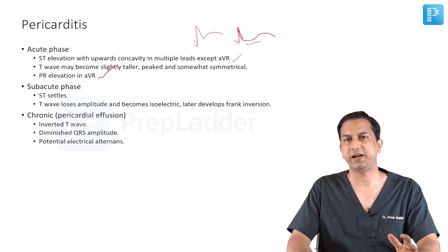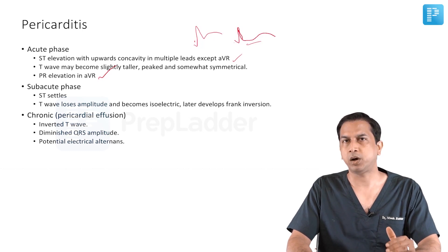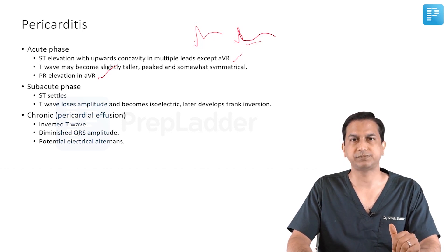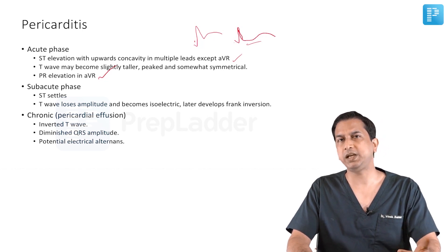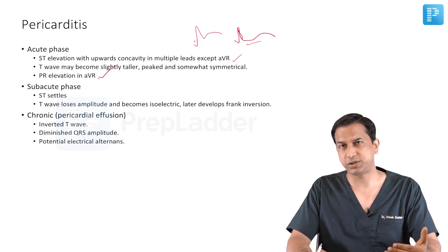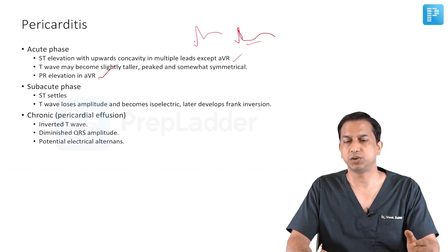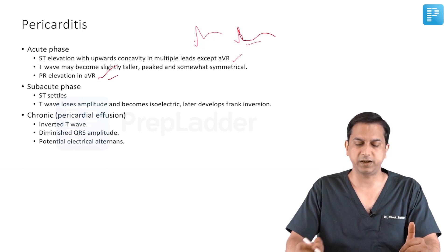To summarize, in the acute phase of pericarditis you will have ST elevation with concavity upwards in multiple leads, not following the regional territorial blood supply, except in AVR where there will be ST depression. The T wave is upright — it can be hyperacute and is not inverted. Unlike acute MI where there is evolution with initial ST elevation followed by T wave inversion and Q waves within hours, in acute pericarditis this does not happen. There is ST elevation but the T waves are upright and PR elevation is present in AVR.